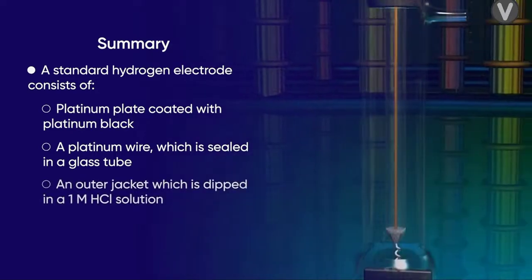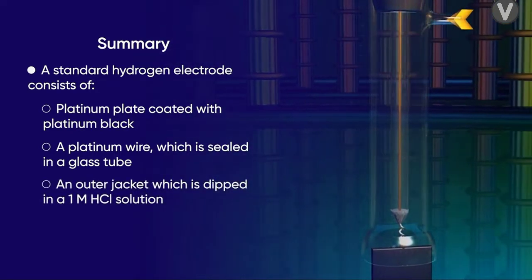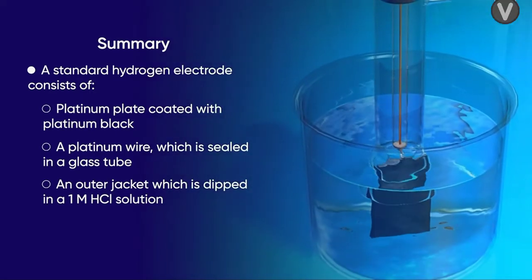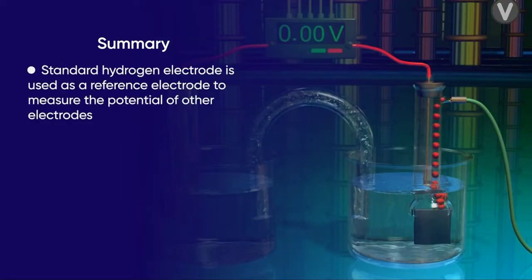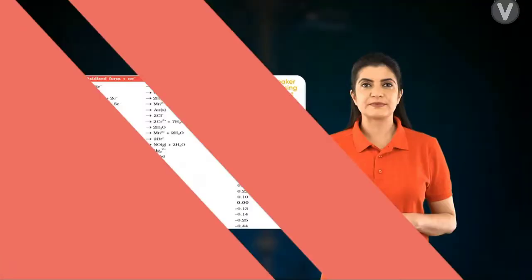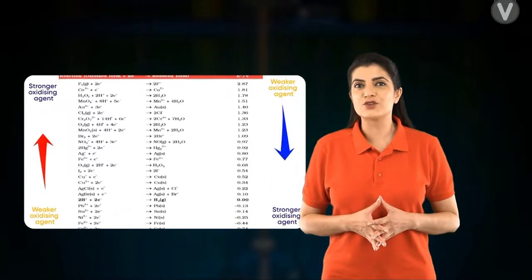This tube is covered with an outer jacket which is dipped in 1 molar HCl solution. It can be used as a reference electrode to measure the potential of other electrodes.